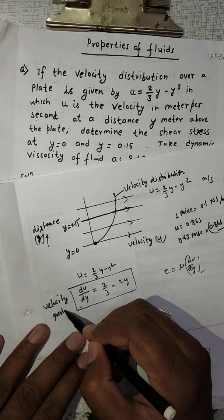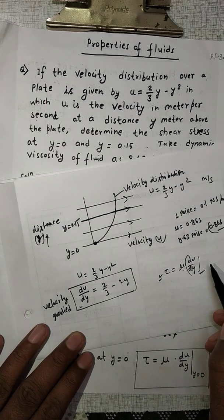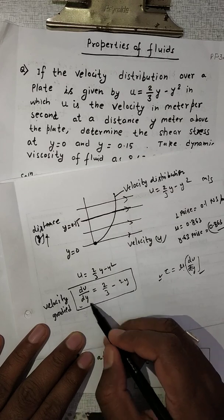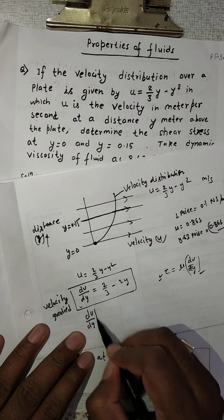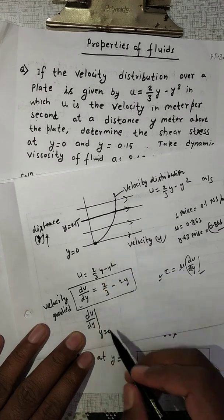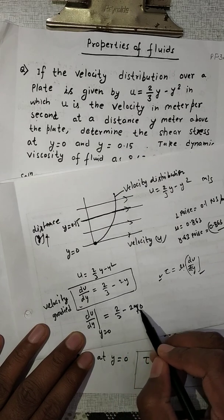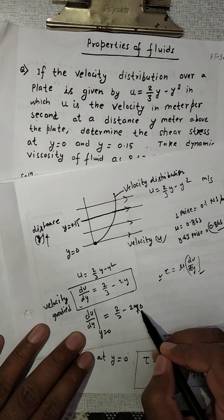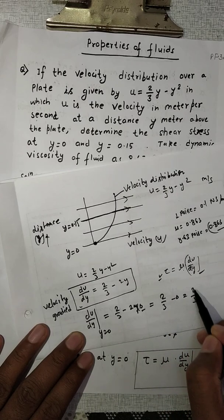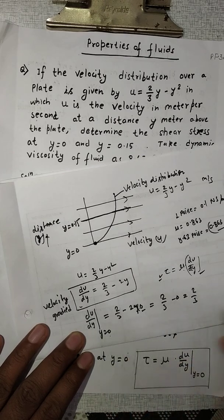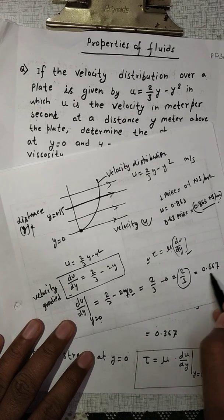We are finding the velocity gradient because the shear stress value equals μ·(du/dy). We need this at two locations. At y = 0: du/dy = 2/3 - 2y, putting y = 0 gives 2/3 - 0 = 2/3. So du/dy at y = 0 equals 0.667.